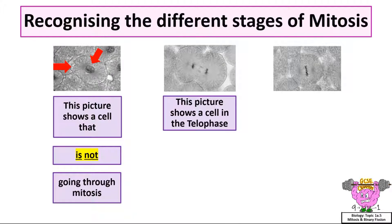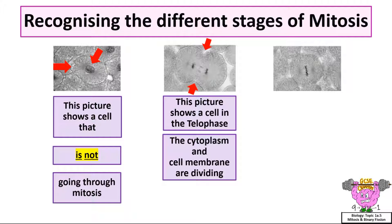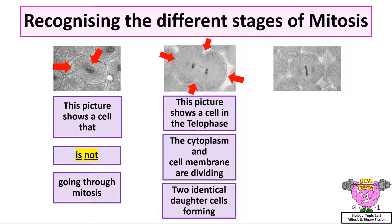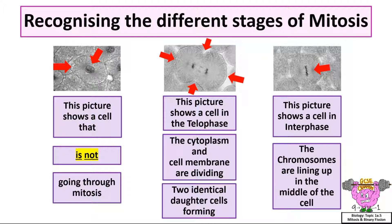This picture shows a cell in telophase. The cytoplasm and cell membrane are dividing, and you can see two identical daughter cells forming. And this picture shows a cell in interphase, because you can see the chromosomes are lining up in the middle of the cell.